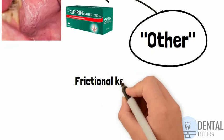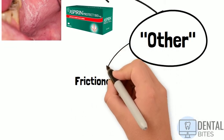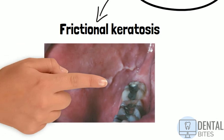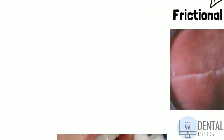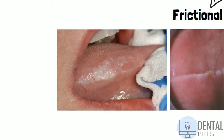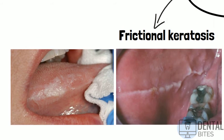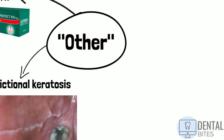Frictional keratosis, which happens due to chronic irritation of the oral mucosa, is caused particularly by friction from the teeth and is seen mainly at the occlusal line in the buccal mucosa, especially in adult females. It's also commonly seen on the lateral borders of the tongue.